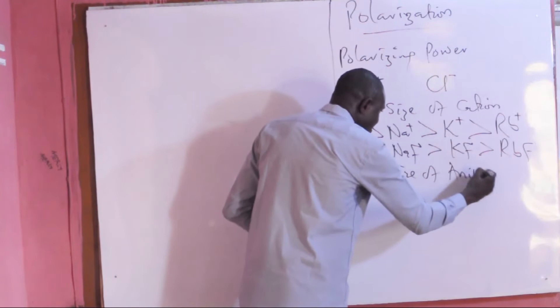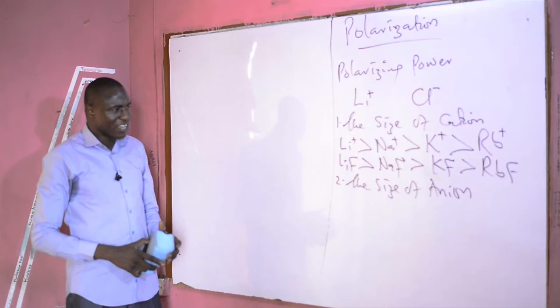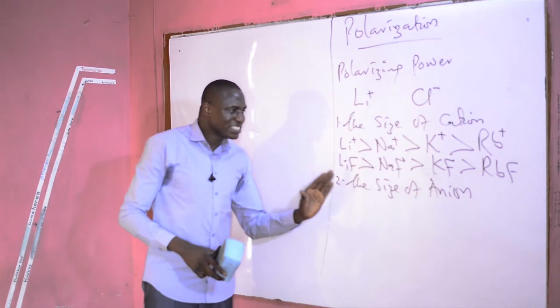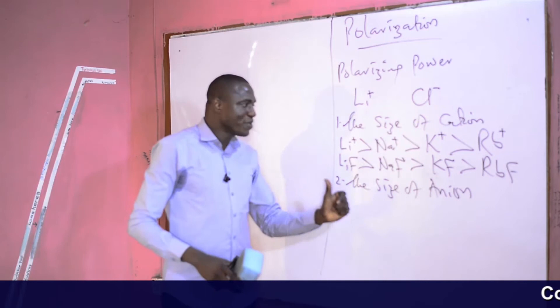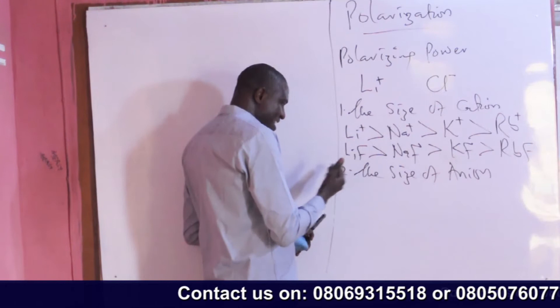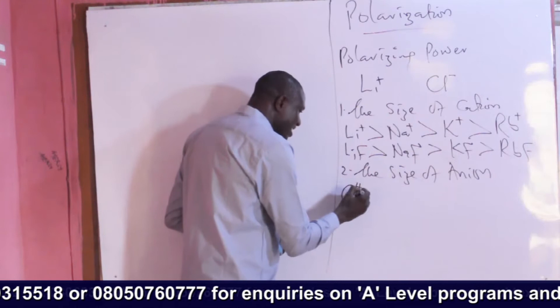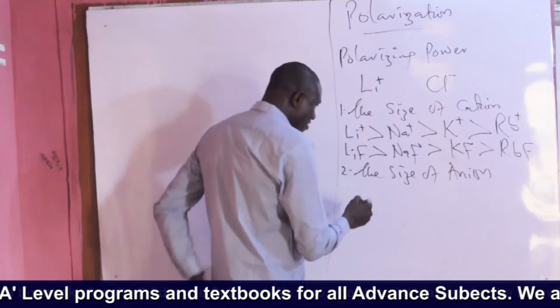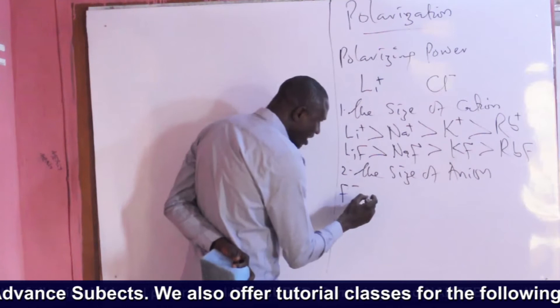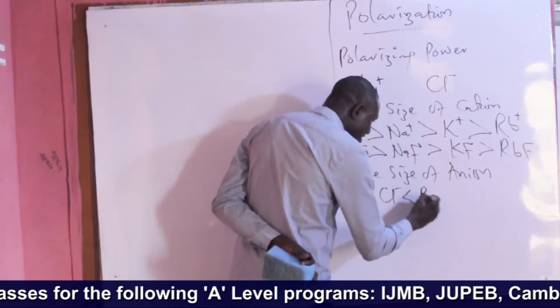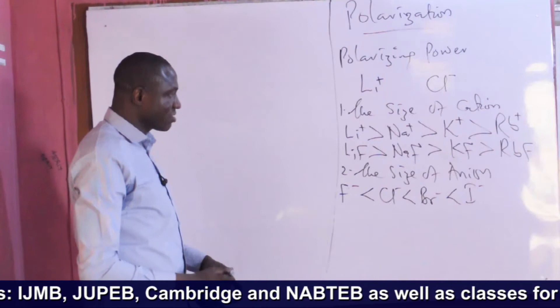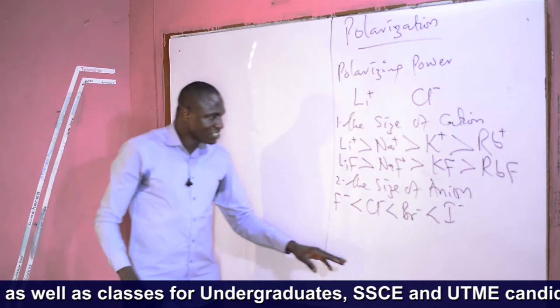The second factor is the size of anions. Larger anions tend to be more polarized than smaller anions — the larger the size of the anion, the higher its polarization. For example, looking at group 17, we have fluoride ion less than chloride ion, less than bromide ion, and less than iodide ion. As you go down the group, the size of the element tends to increase, as explained in our previous episode.